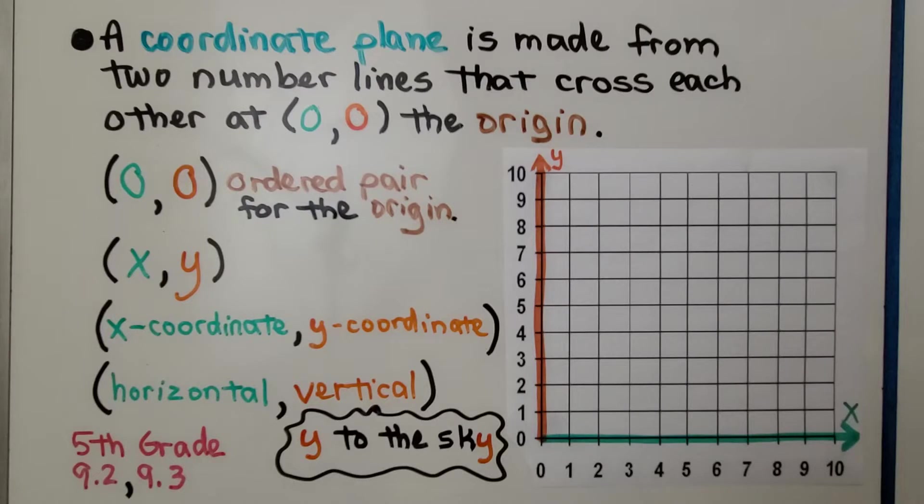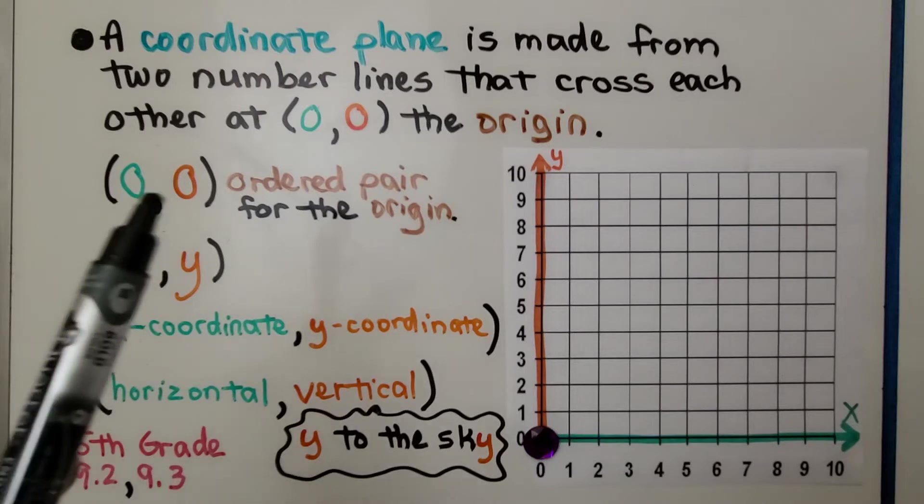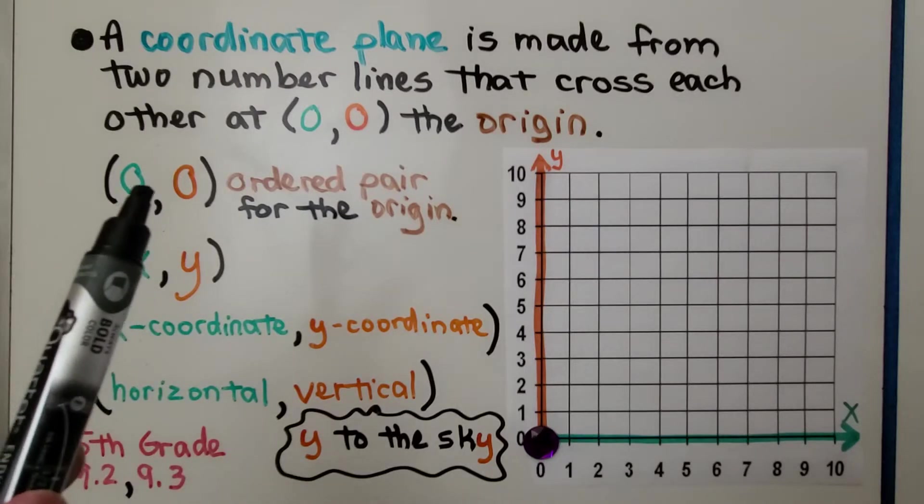A coordinate plane is made from two number lines that cross each other at 0,0, the origin. This point right here, where this number line meets this number line, is the origin, that's 0,0. It's this point right here. And 0,0 is the ordered pair for the origin.